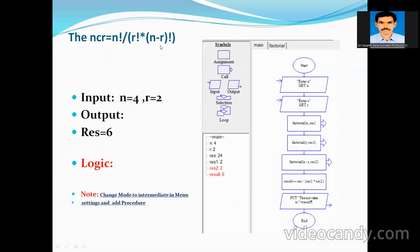This is the beauty of reusability — you define the fact function only once and call it three times by passing different parameters: the first is n, the second is r, the third is n minus r. For this example I am taking n=4 and r=2, so that is 4 factorial divided by 2 factorial into 2 factorial, and the result will come to 6. For that purpose I am reading the n and r values in my main flowchart.